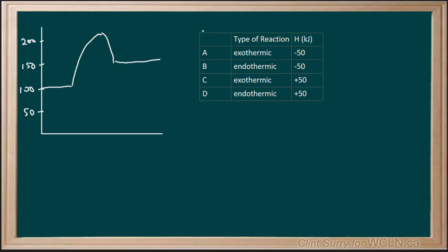In this question, we're asked to describe the type of reaction and the change in enthalpy for the forward reaction. One of the first things we can see here is our reactants and our products where the products are higher up than the reactants.